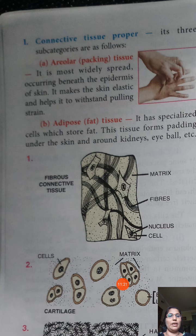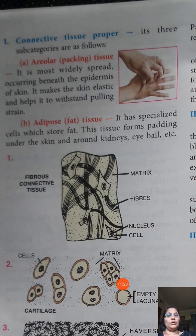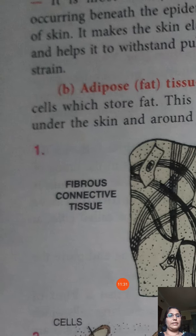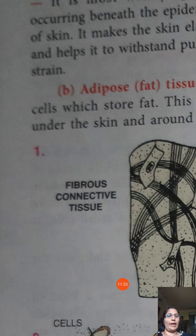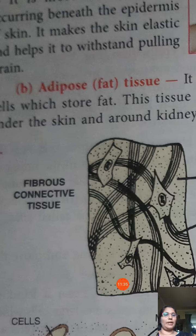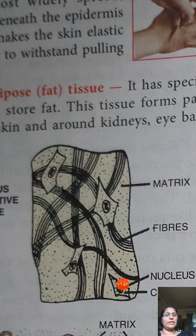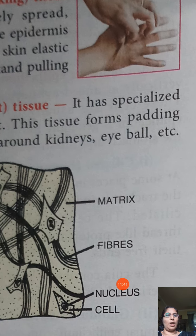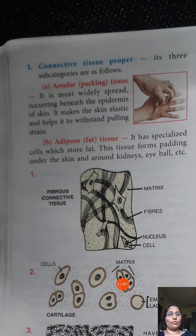Adipose tissue means fat tissue. Fat tissues are present in many parts of the body — sometimes under the skin, around internal organs, around the kidneys, the heart, or around the eyeball.